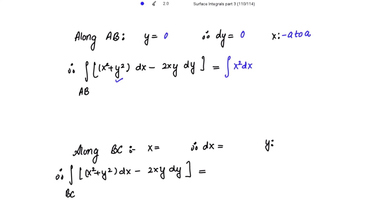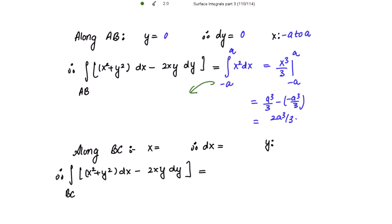In the first term, y is 0, so we get x squared dx. In the second term, y is 0 and dy is also 0, so the second term is 0. Integrating x squared with limits from minus a to a, we get x cubed divided by 3, giving a cubed over 3 minus minus a cubed over 3, which equals 2a cubed divided by 3.